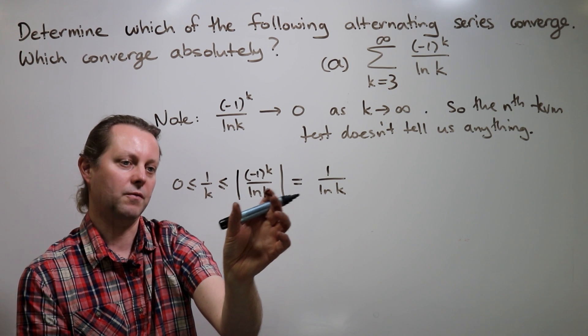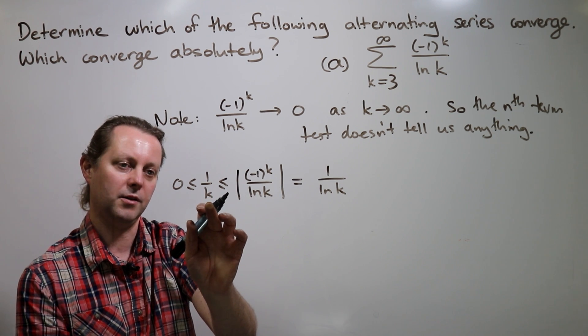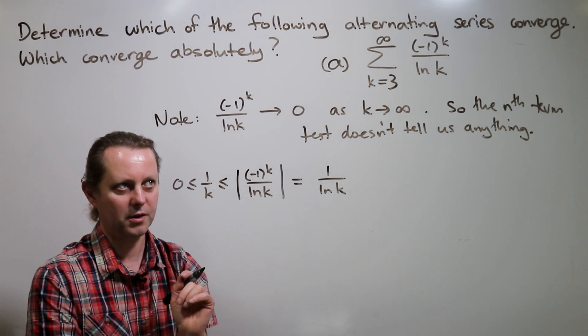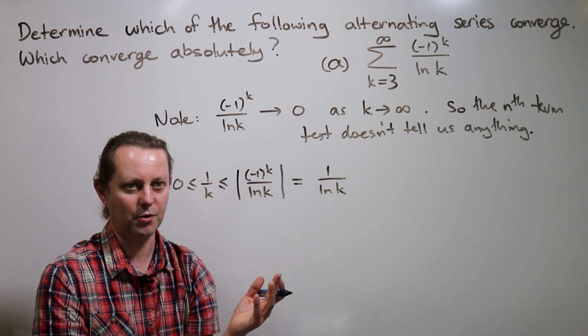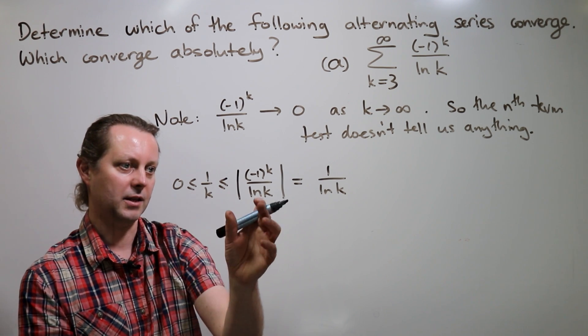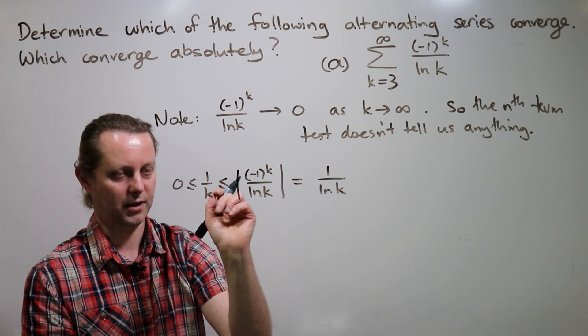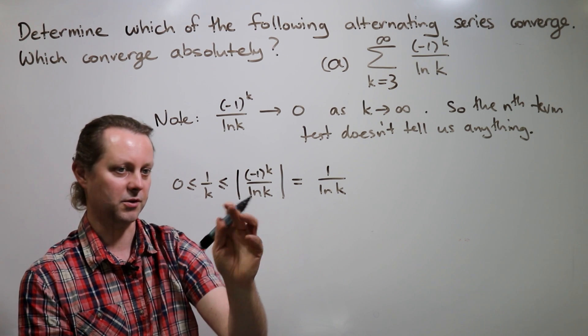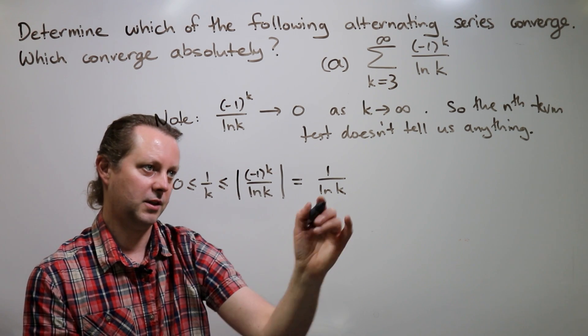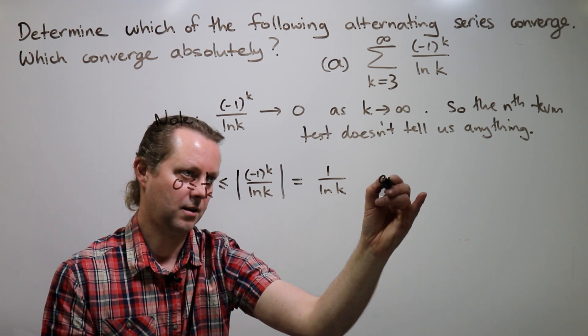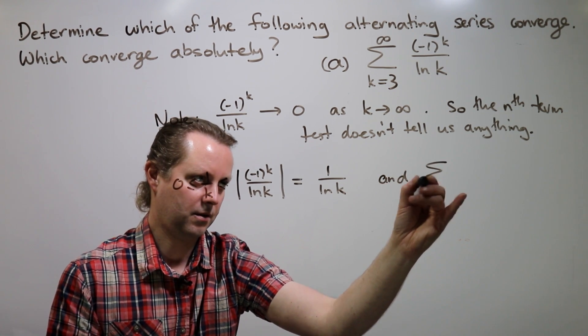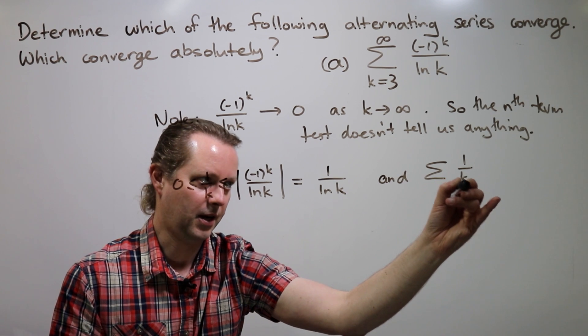if we were to take the absolute value of the terms in the series, we would have a series of terms which were all bigger than one over k. And we know that summing one over k in a series is divergent, that's the harmonic series, it's a well-known divergent series. And these terms are larger than that, so they will diverge as well. So this inequality together with the well-known fact that the sum of one over k diverges